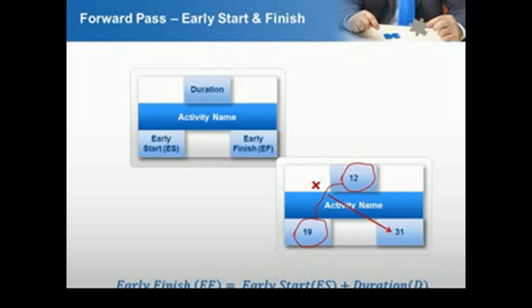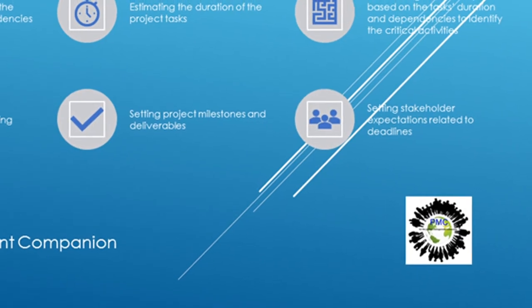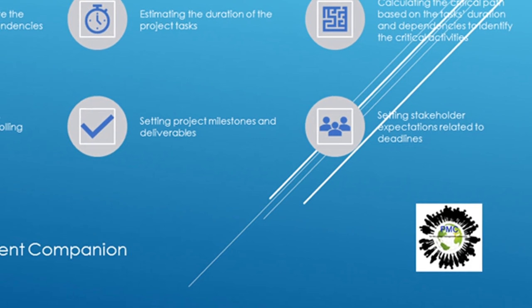The critical path method includes identifying every task necessary to complete the project and the dependencies between them, estimating the duration of the project tasks, calculating the critical path based on the tasks duration and dependencies to identify the critical activities, focusing on planning, scheduling and controlling critical activities, setting project milestones and deliverables, and setting stakeholder expectations related to deadlines.